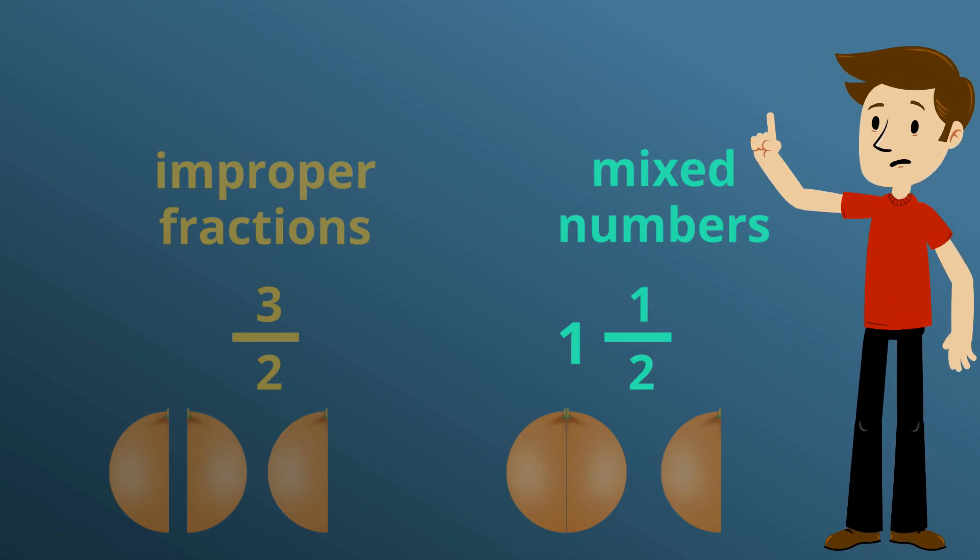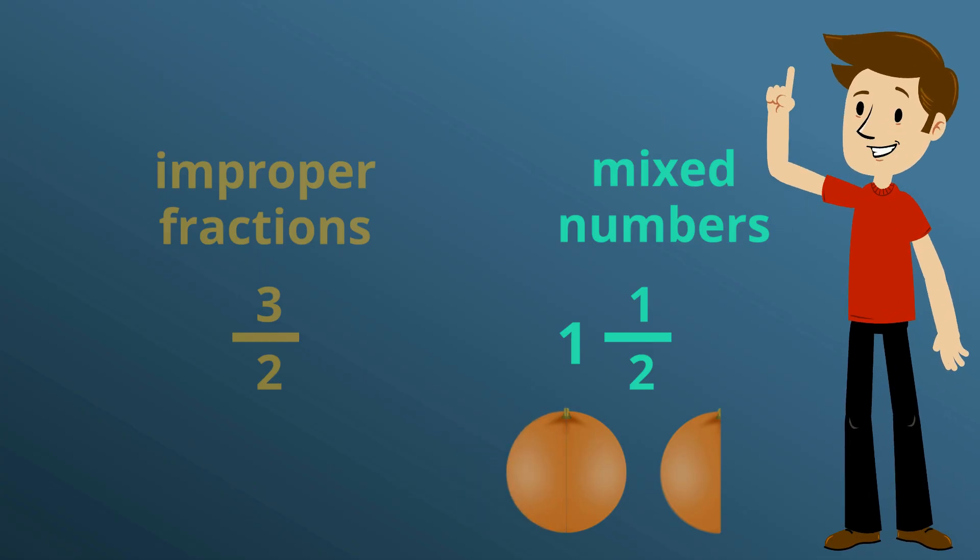You can see here that three halves and one and a half are equivalent. Let's look at how we can convert between the two.